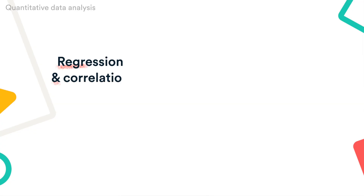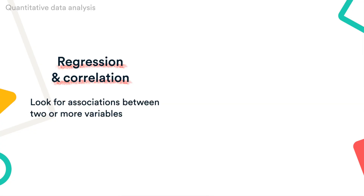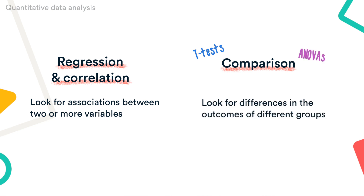Then, to test a hypothesis about a relationship between variables, you can use a statistical test. Regression and correlation tests look for associations between two or more variables. Comparison tests, like t-tests and ANOVAs, look for differences in the outcomes of different groups. Your choice of statistical tests depends on various aspects of your research design, including the types of variables you're dealing with and the distribution of your data.